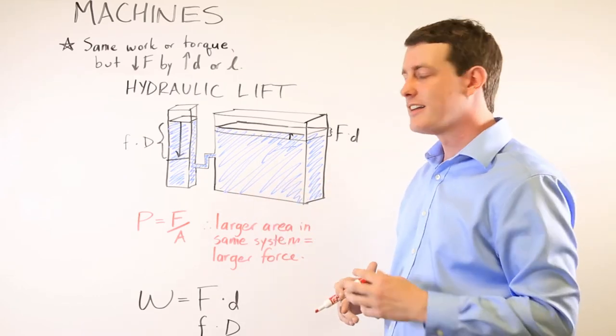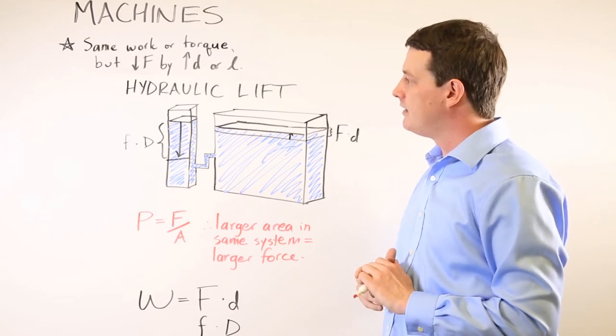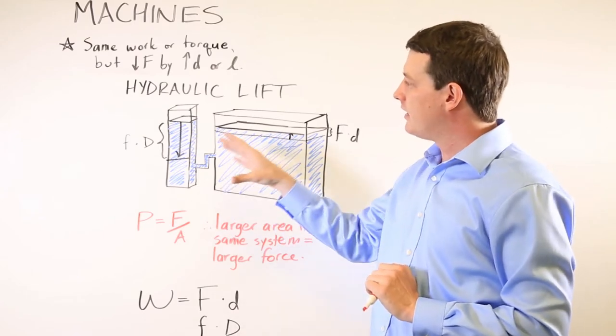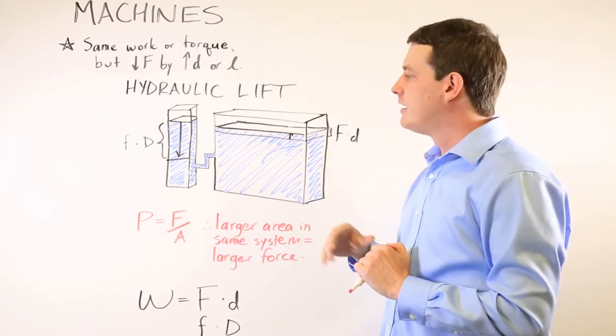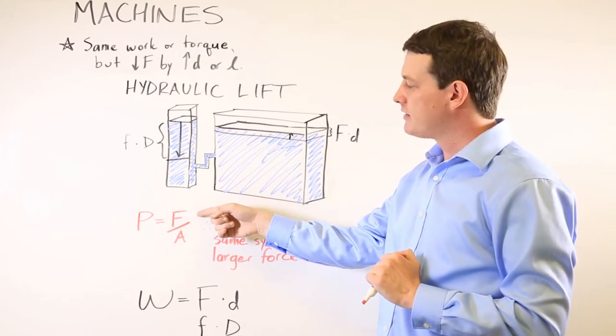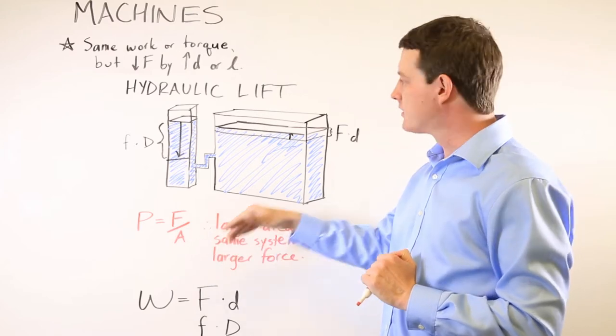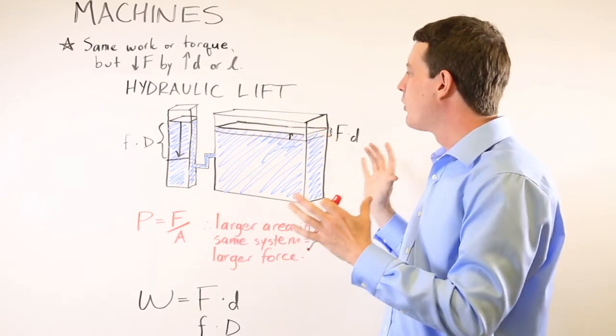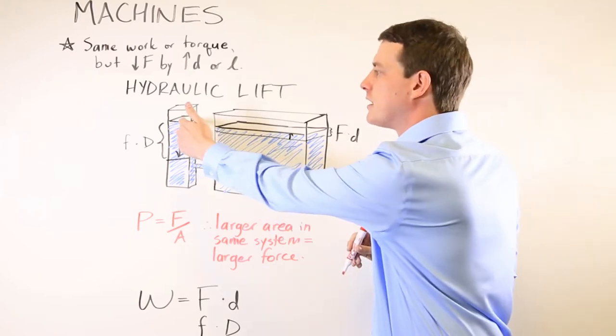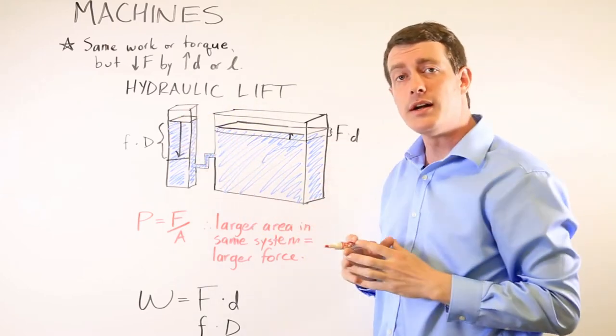The second thing they like to test is the recognition that in the same system where pressure is constant, the force is directly proportional to its area. A larger thing will require a larger force to move it versus something with a smaller surface area.